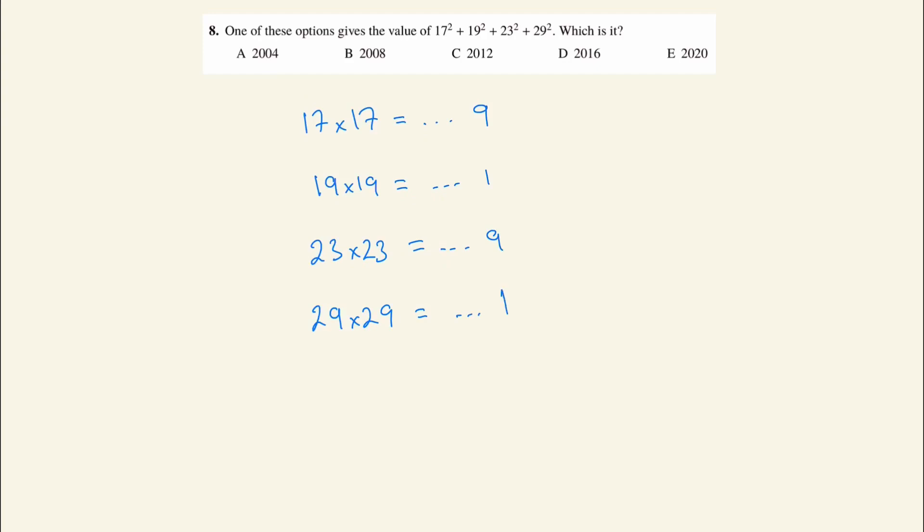When we add these all up, 9 + 1 + 9 + 1, we get 20. That means it has to end in a 0, and therefore our answer is E.